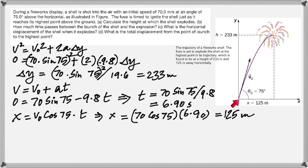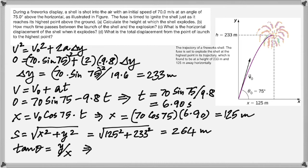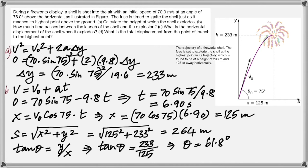This is the position of launch, and you're asked to find the hypotenuse. You already have 125 and 233, so go ahead and find it. When asked to find the displacement, you also have to find the angle. Tan theta equals opposite side by adjacent — you get 233 divided by 125, giving 61.8 degrees.